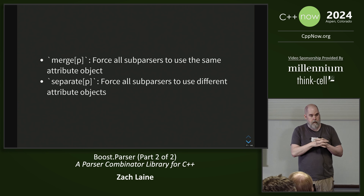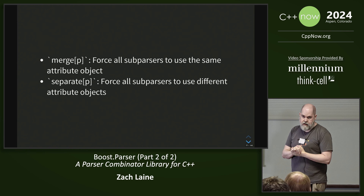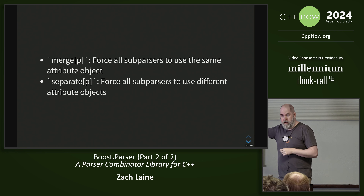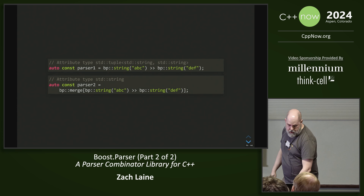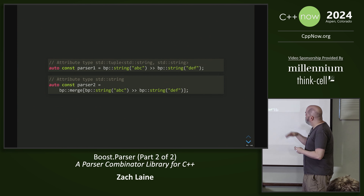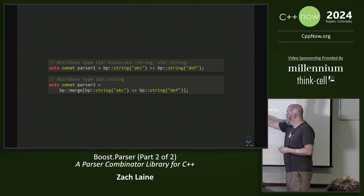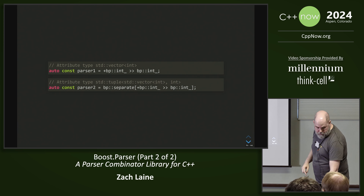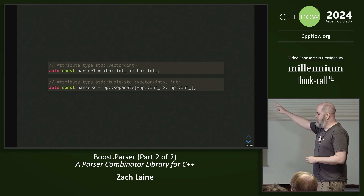So with merge — I've got two strings, presumably with white space and comment skipping in the middle — by default this produces a tuple of two strings, but if I say merge it produces one string. This seems nonsensical: why didn't I just write ABCDEF? But the fact that you can do skipping in here makes that significant. And with separate: I get a tuple of vector and int instead of just one vector of int in the case where plus(int) followed by int would normally merge.